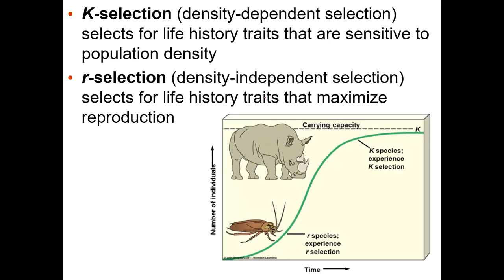K selection is density dependent selection. K-selecting species tend to have their populations generally around carrying capacity. These are organisms that don't have a huge number of babies — they have few babies and put a lot of energy into each one. Examples include rhinoceroses and elephants — animals that have maybe one or two babies a year and invest a lot of effort into each.